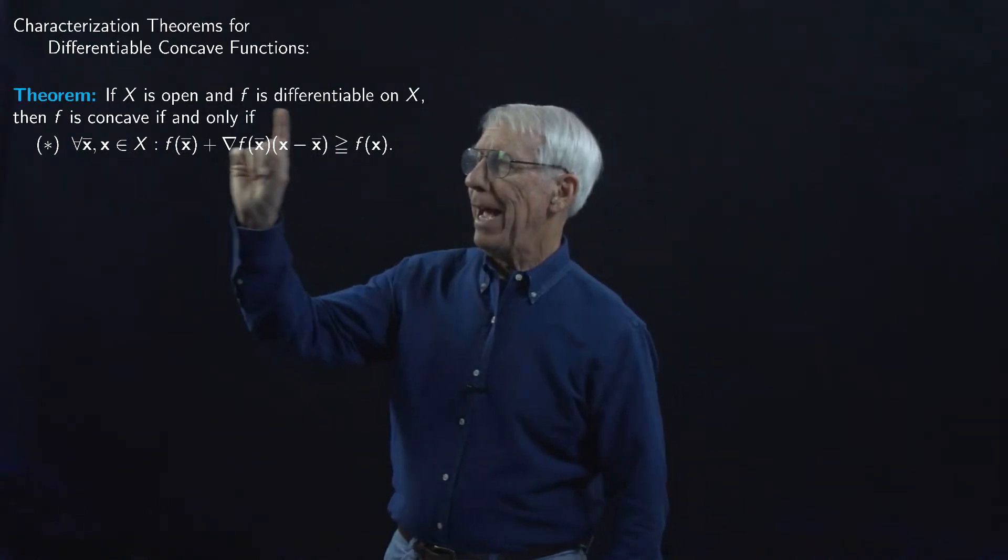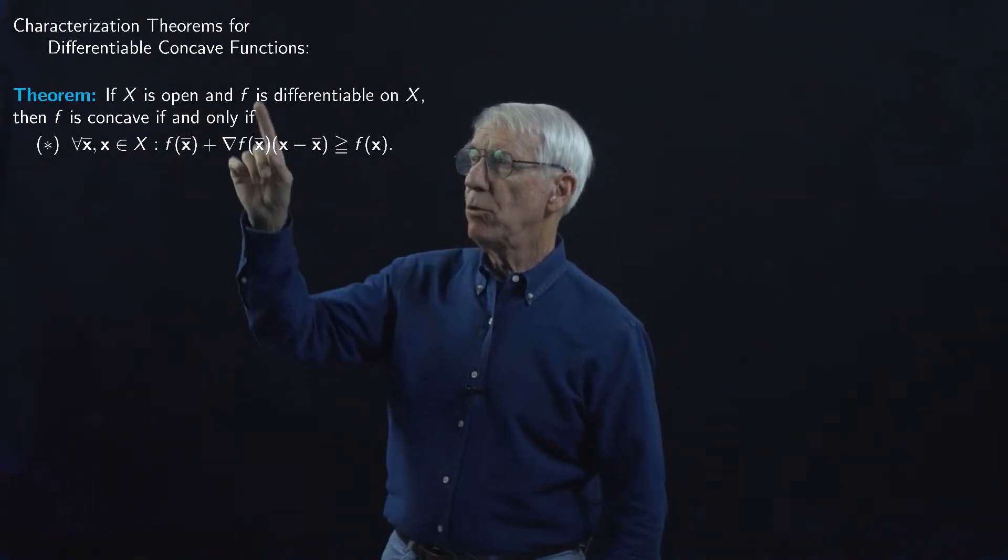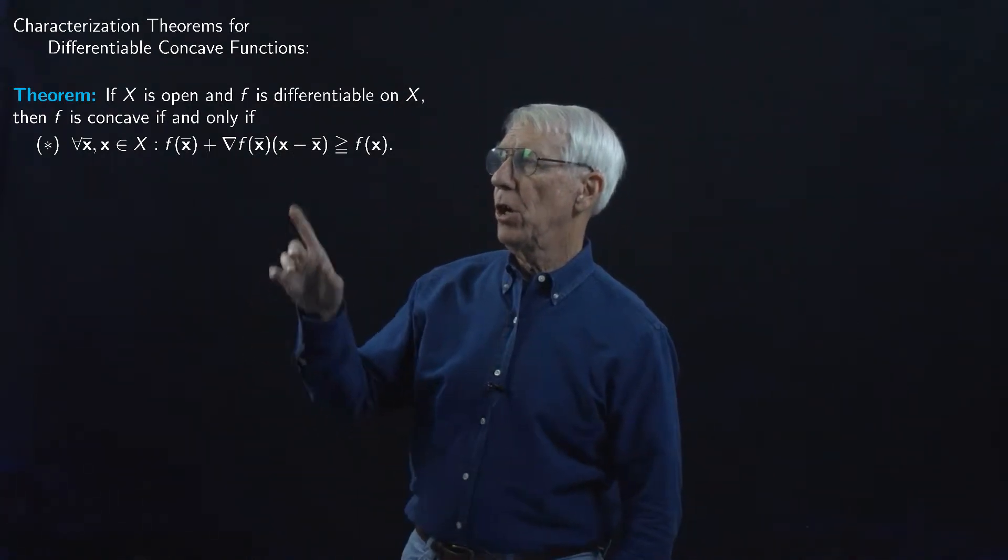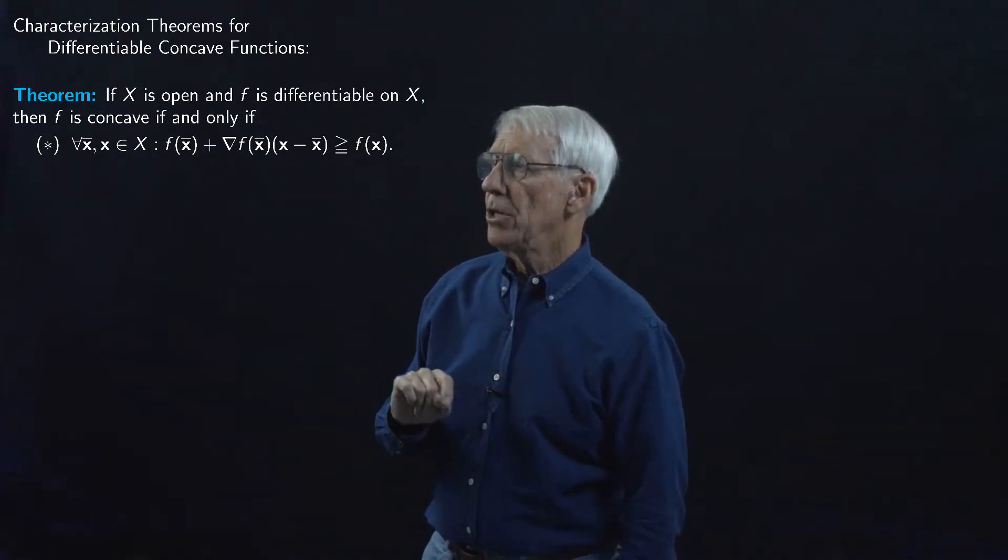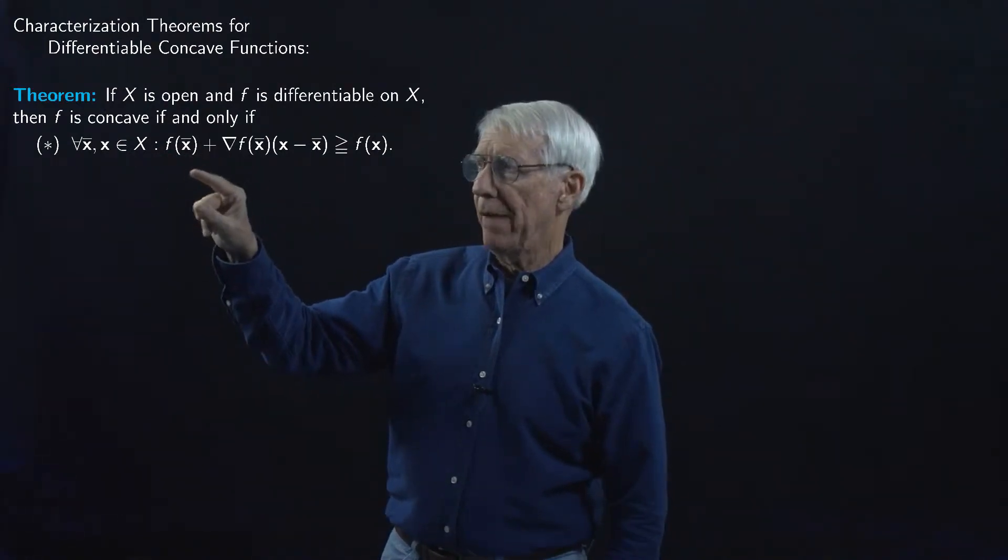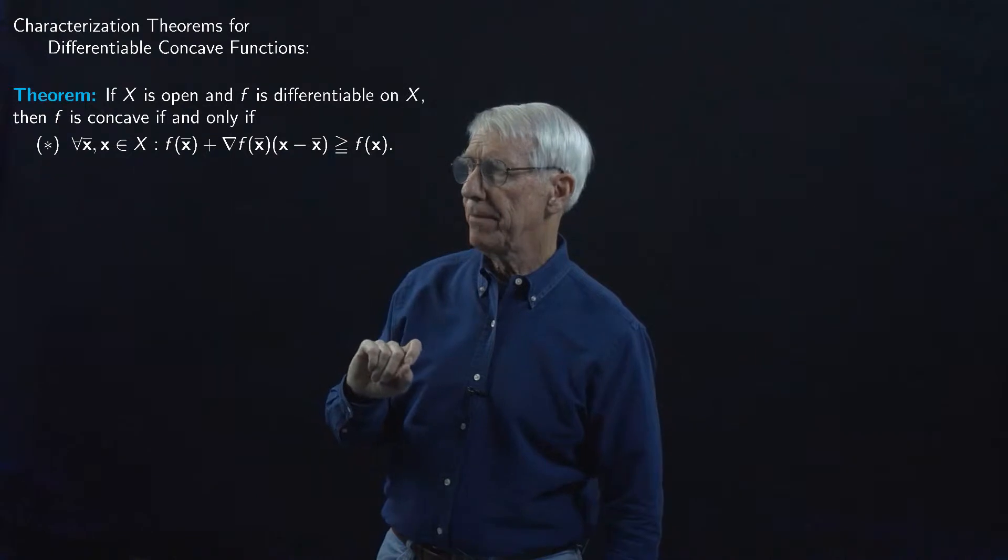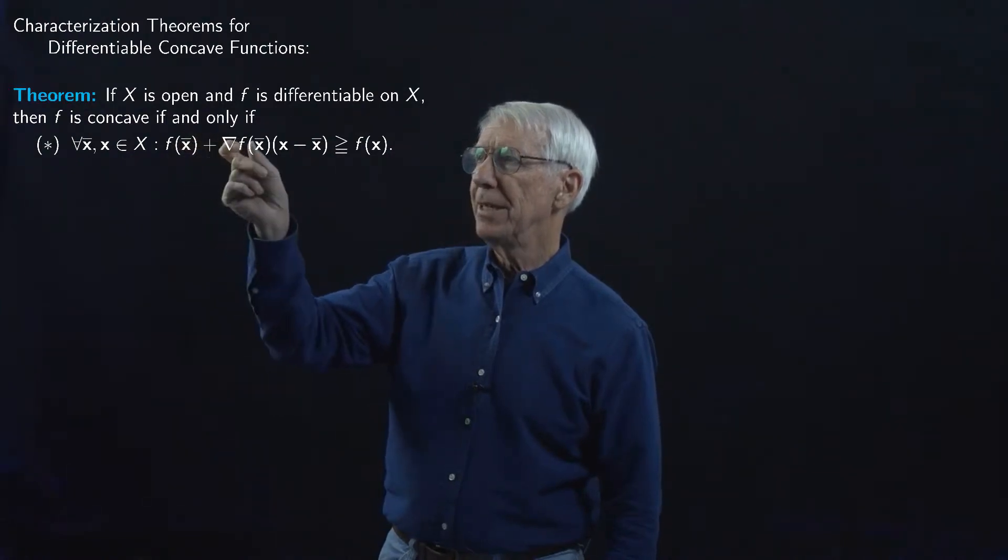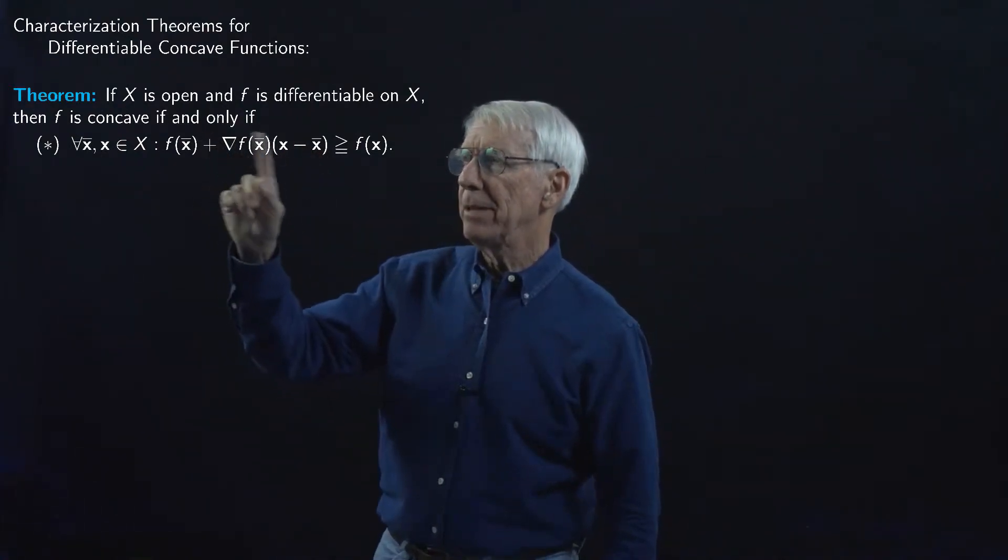So we have a convex set capital X that's an open set, and we're working with a function now that's differentiable everywhere on its domain. The function will be concave if and only if this condition with the asterisk is satisfied. Notice that this condition says something about any pair of points in the domain. I've called them X and X-bar, you could call them X and Y, any pair of points in the domain X. It's got to be the case that this expression on the left, where we have F of X-bar plus the gradient of F times delta X, has got to be greater than or equal to F of X.